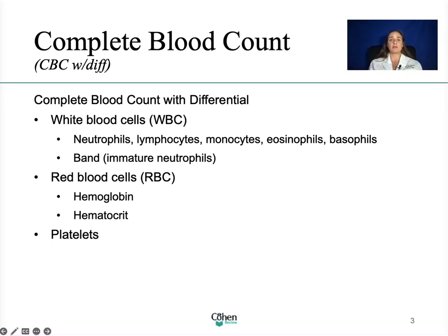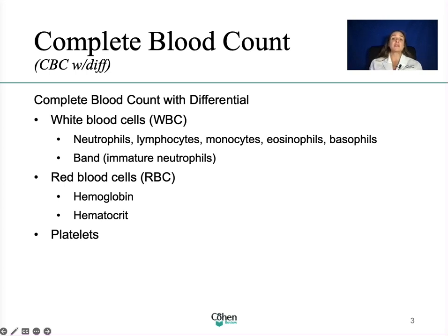Low red blood cell count: common causes are iron deficiency anemia, bleeding, kidney disease — because the kidney plays an important role in making red blood cells — cancer, medications, vitamin deficiencies such as B12 (a form of anemia), radiation due to destruction of red blood cells, pregnancy due to the demand of two people consuming the same supply, and overhydration due to too much dilution.